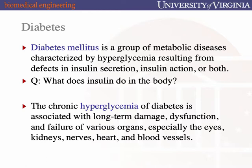Therefore, high blood sugar or hyperglycemia — I want you to equate this to cellular starvation. There's sugar everywhere in the bloodstream, and that's because the cells are not getting enough nutrients via that same bloodstream, and this is because of problems with insulin. The long-term hyperglycemic condition, this cellular starvation condition, gives rise to long-term damage in a variety of tissues.